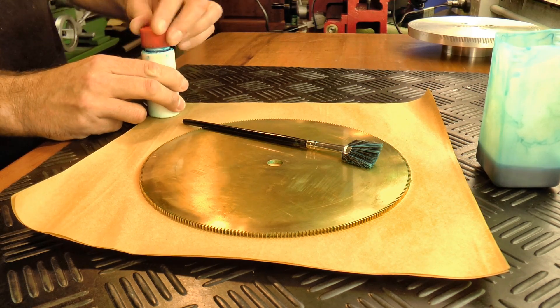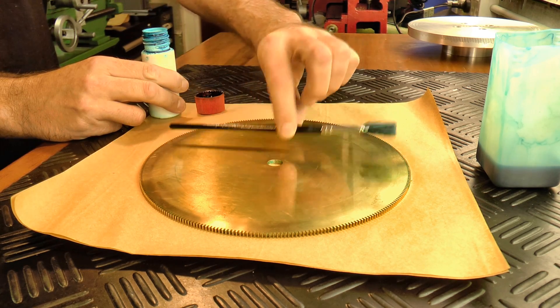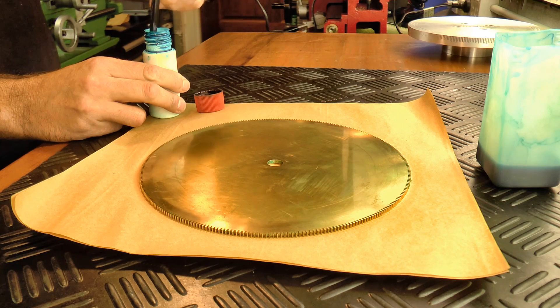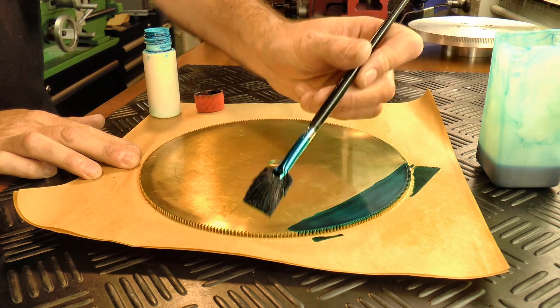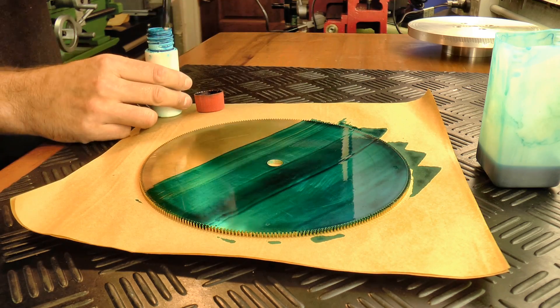First up, I applied some layout fluid to prepare for marking out. This layout blue is an old bottle I'm trying to finish off. Unfortunately, I think it might be past its use-by date. It painted on okay, but you'll see later it wasn't the best to scribe a line on.